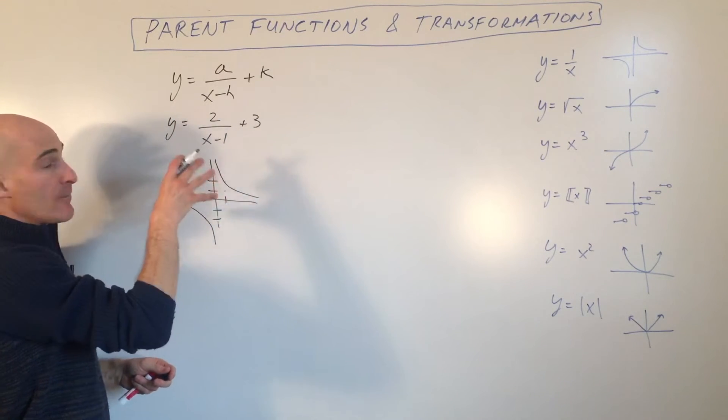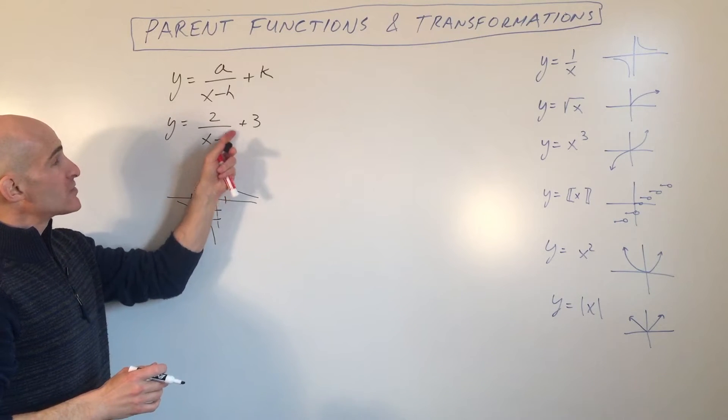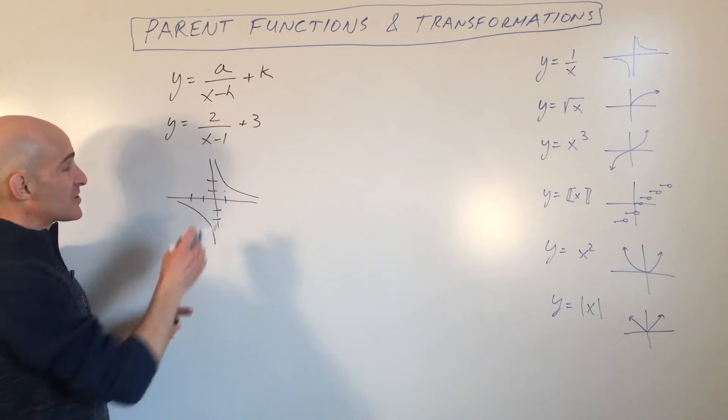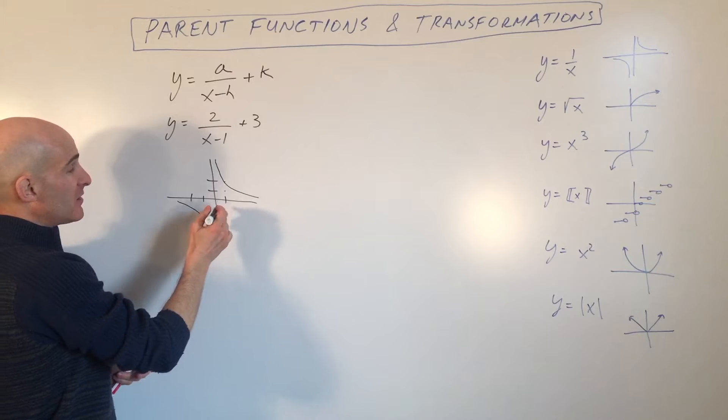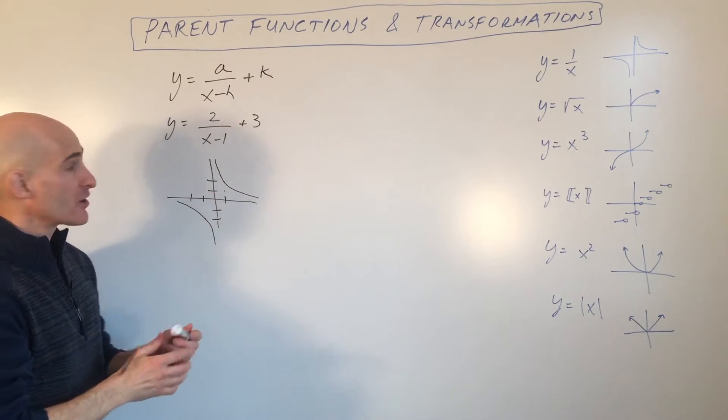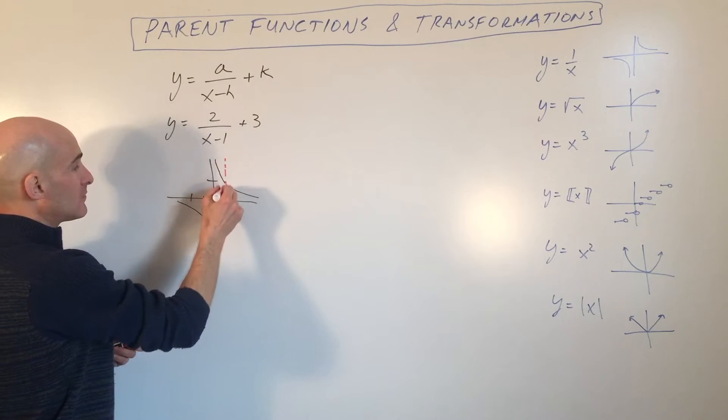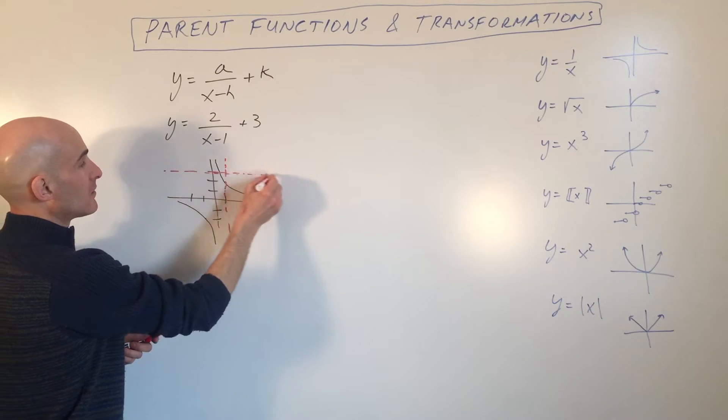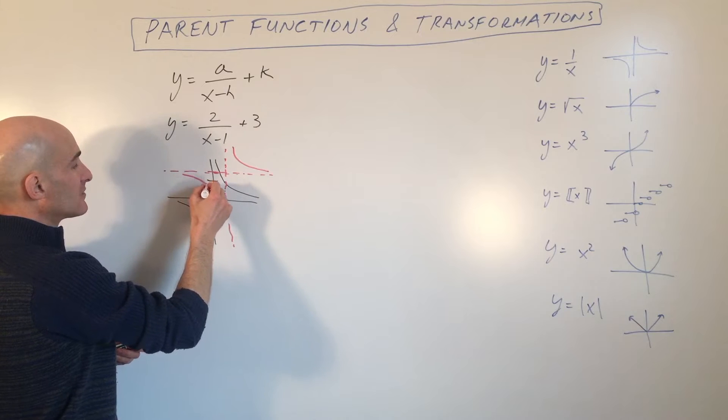But the 1 and the 3, they pick up the graph and they shift it left and right, up and down. The 1 that's grouped with the x, it has the opposite effect on the graph. If it's minus 1, it actually shifts the graph right 1 and up 3. So each of these points is going to shift right 1, up 3. Even the asymptotes themselves are going to shift right 1, up 3. So now you can see your graph is going to look more like something like that.